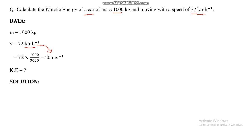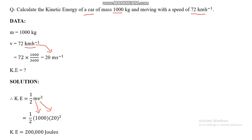Now we find kinetic energy using the formula: kinetic energy equals half mv squared. Substituting the values: half multiplied by m equals 1000, and velocity v equals 20, so we get half times 1000 times 20 squared. First take 20 squared, multiply by 1000, then divide by 2. This gives us the kinetic energy. Remember the formula: KE equals half mv squared, where m is mass and v is velocity. Substitute and simplify to find the answer.